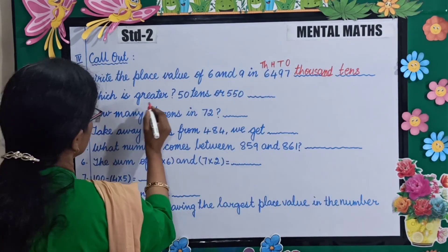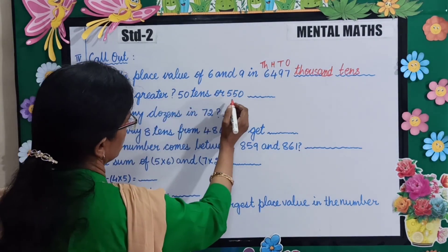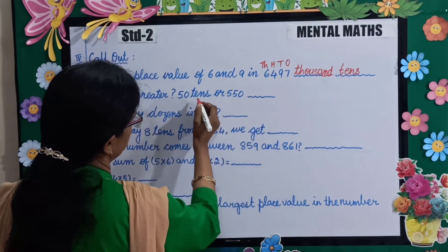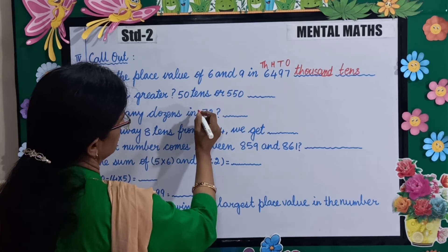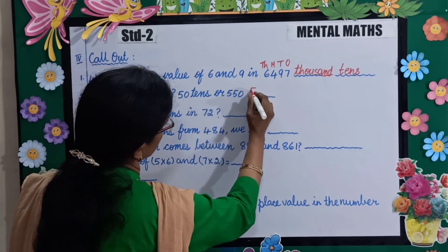Which is greater: 50 tens or 550? 50 tens means 500. So which is greater? 550.